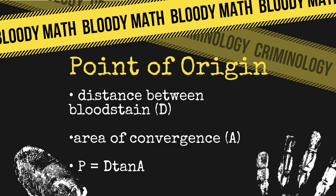To find this, the distance between a blood stain and the area of convergence is measured, labeled as D, and the formula P = D × tan(A) is used, wherein P is the point of origin.